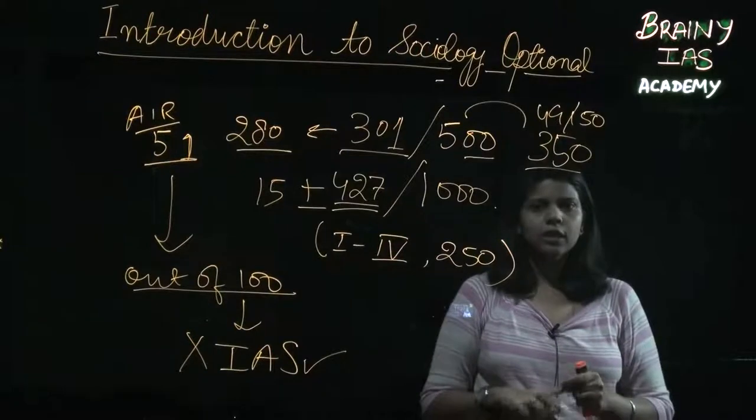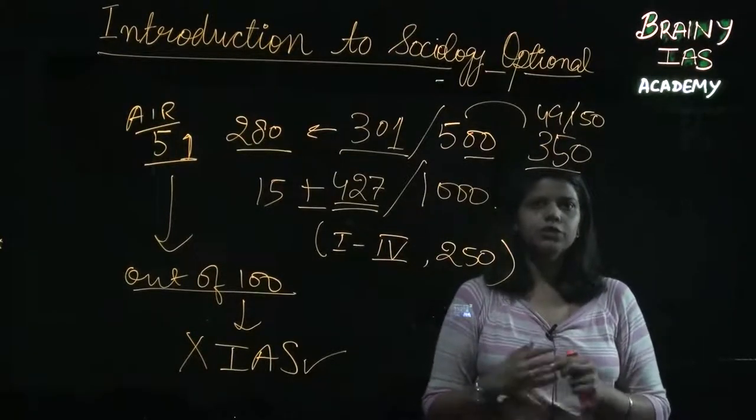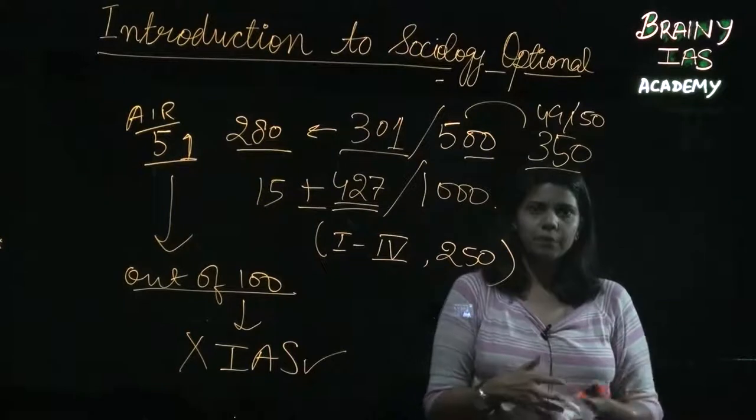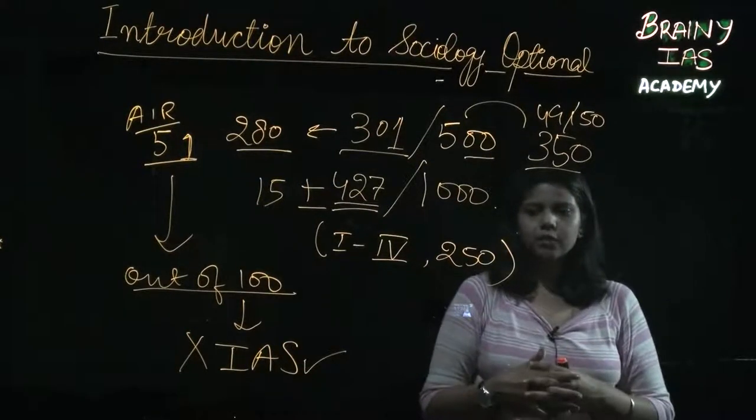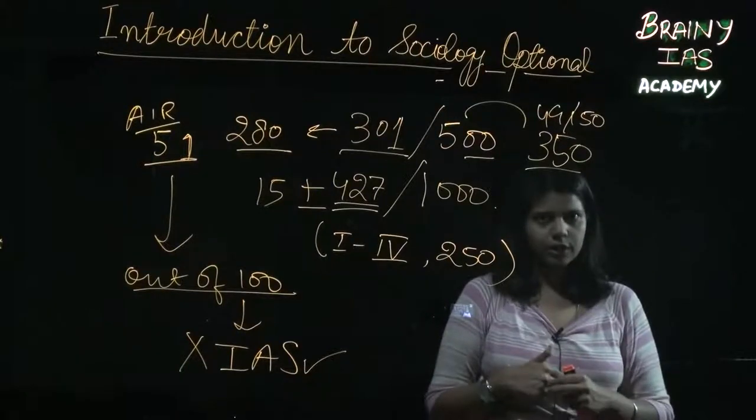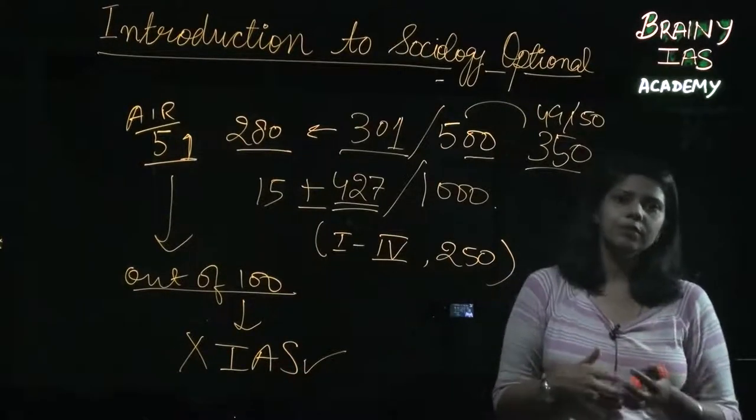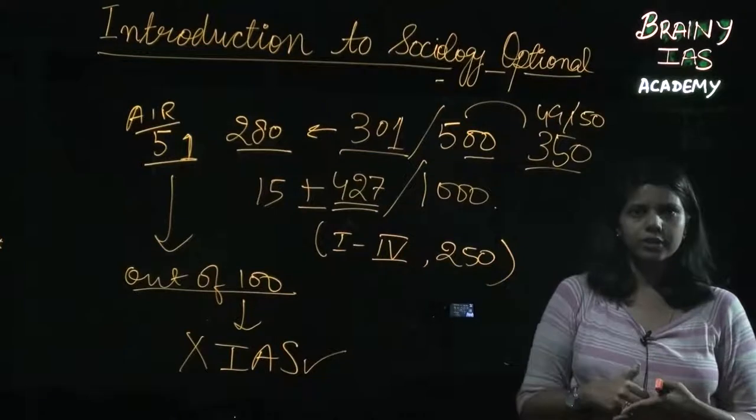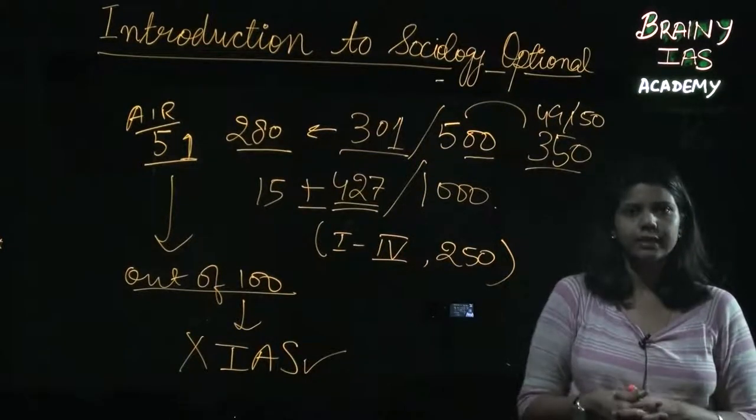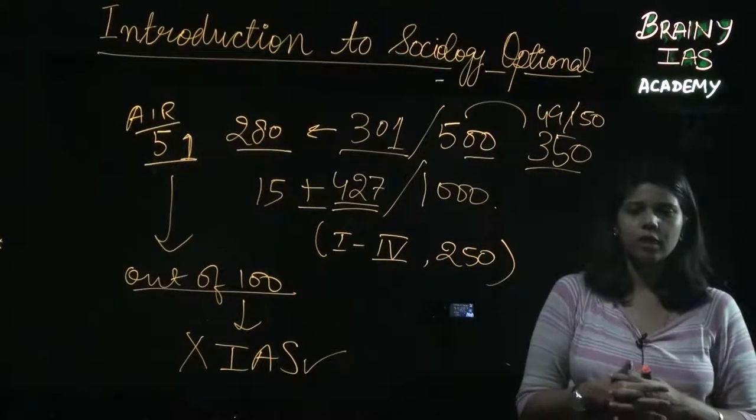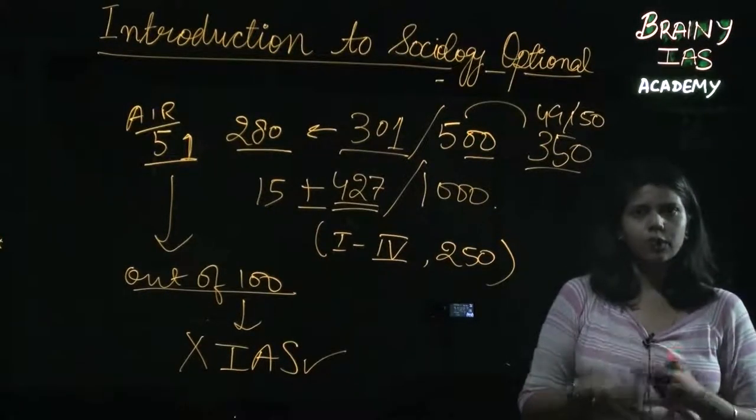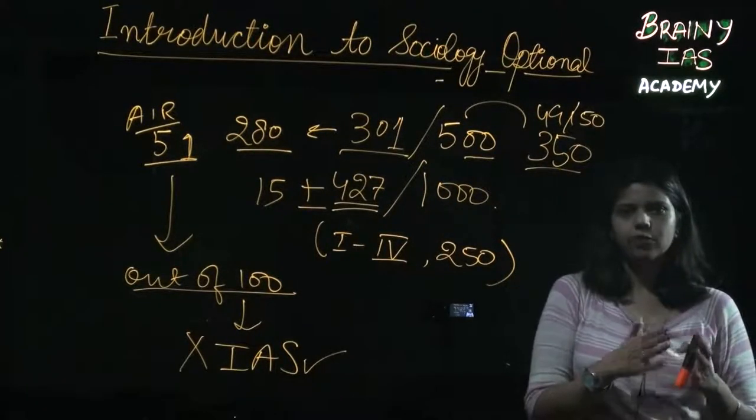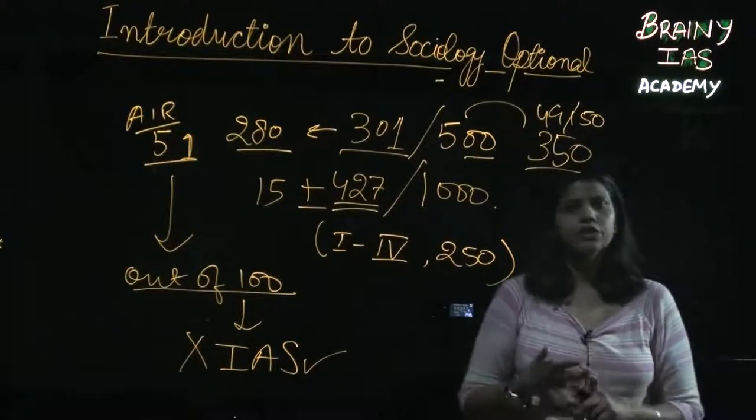Apart from GS1, sociology as an optional also helps you in GS3 where you are dealing with environmental ethics, you are dealing with the economics and its impact on people. To give you an example, in 2016 there was a question on financial inclusion. Financial inclusion and its impact on society, the digitization involved, it is a topic which is very important when you are dealing with sociology, particularly social mobility, stratification at all. So sociology definitely is one optional wherein you can get maximum return in the same time that you would invest in any other optional.